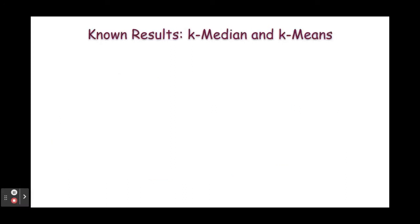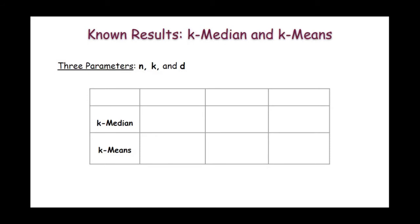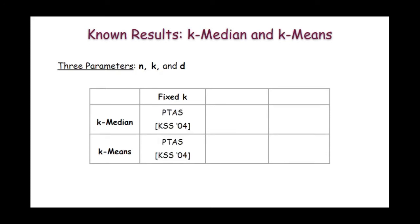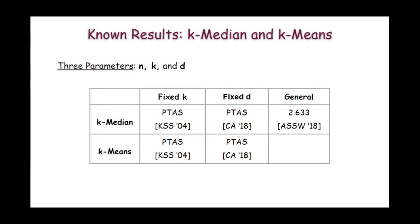So now let us discuss what results we already know about the k-median and k-means problem. Note that there are three parameters to the problem: n, which is the number of clients; k, which is the number of facilities that we want to open; and d, which is the dimension of the Euclidean space. Based on these parameters, various results are known. When k is fixed, a PTAS is known for both these problems. When d is fixed, a PTAS is also known. In the general case, a constant approximation of 2.633 is known for k-median and a 6.3 approximation is known for k-means.